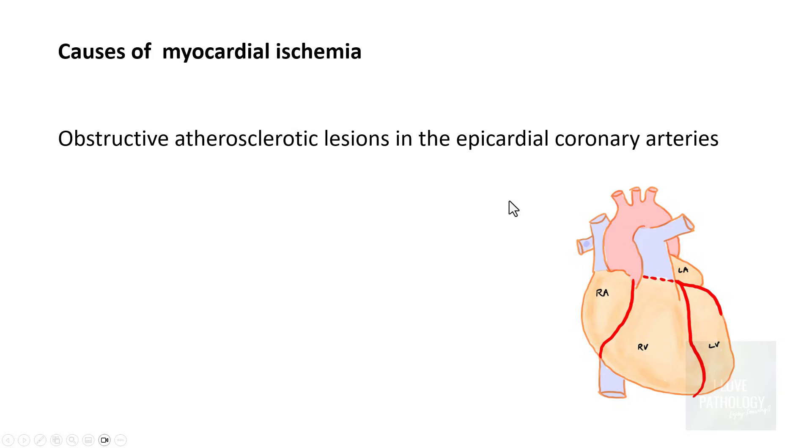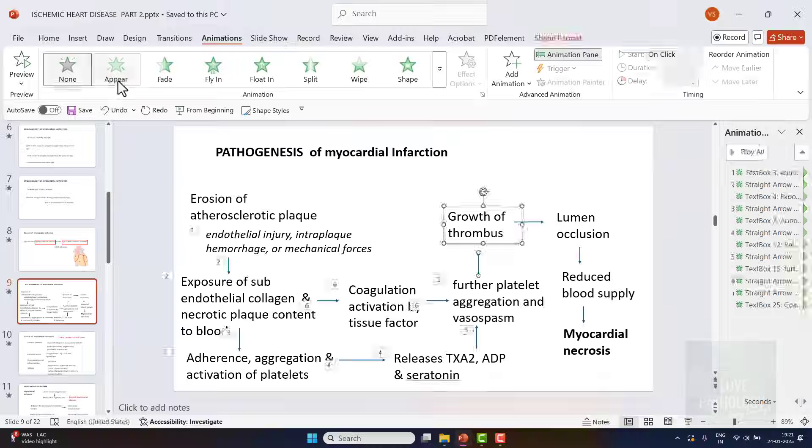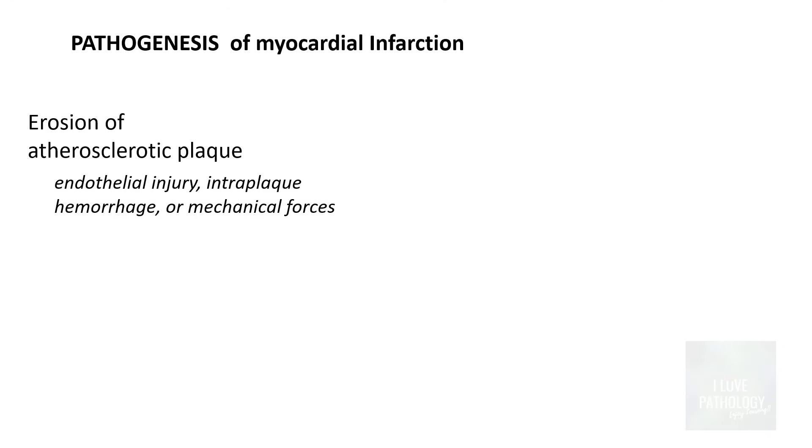So in 90% of the cases of myocardial infarction, the cause is obstructive atherosclerotic lesions in the epicardial coronary arteries. So these arteries are situated in the epicardium. The reason is obstructive atherosclerotic lesions involving in any of these three major coronary arteries.